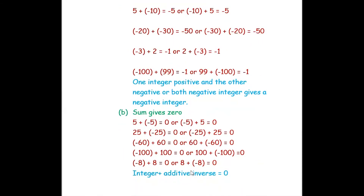The next question is to find two integers such that their sum is 0. If you take 5 plus negative 5, that equals 0, or we can write it as negative 5 plus 5 equals 0.